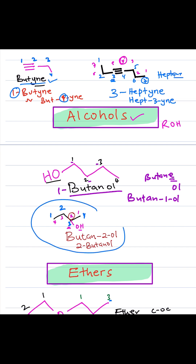Now let's look at the next structure. If we count from the right, the OH is on carbon number 2, and then 3 and 4. So because it has 4 carbons, it becomes butane, and we show the position of the OH — so 2-ol — giving us butane-2-ol, or 2-butanol.